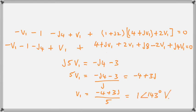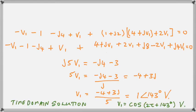Then convert it from rectangular form to polar form. Finally we can write the polar form as an amplitude and a phase angle. So that in green is the time domain solution for V1.